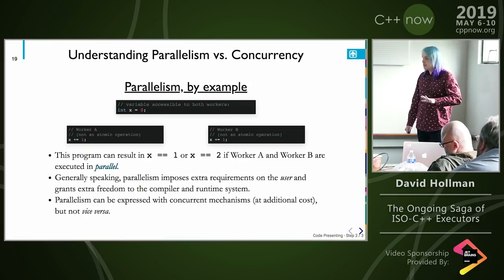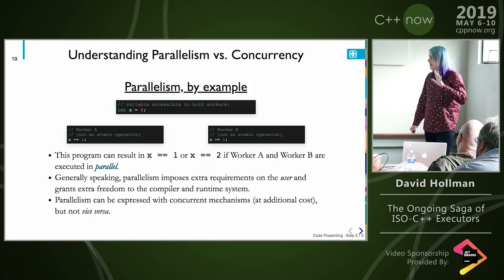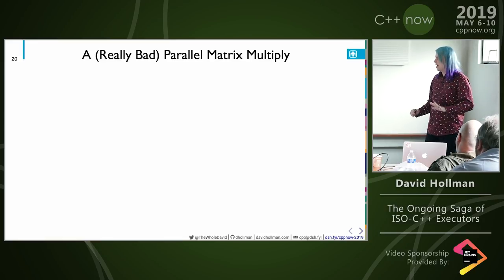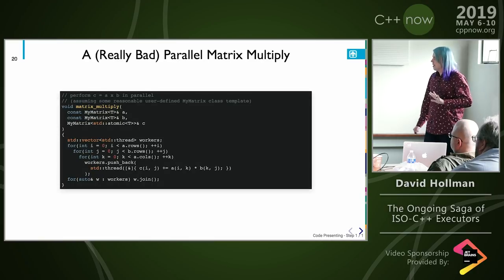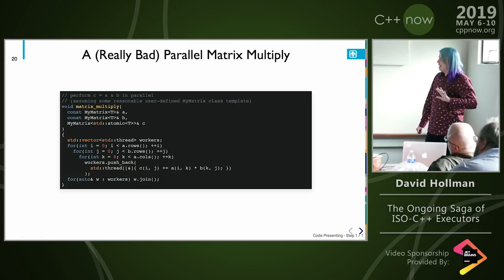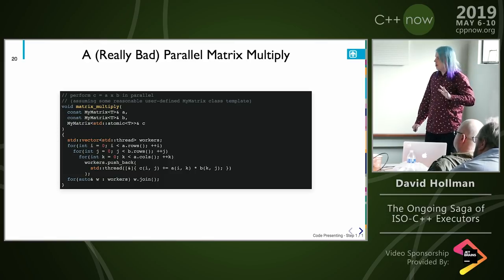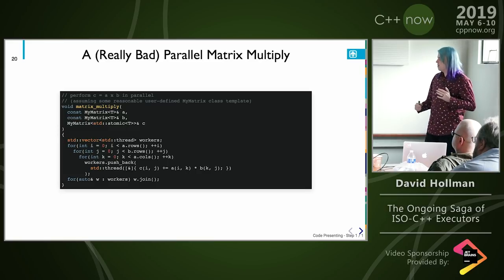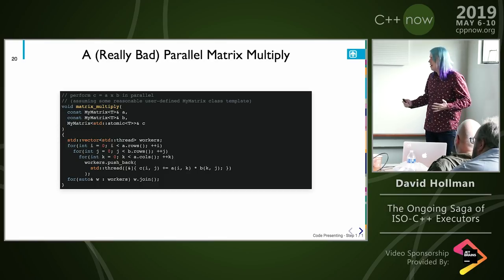This is a very important point: parallelism can be expressed with concurrent mechanisms at an additional cost, but not vice versa. Here's a really bad matrix multiply — I'm going to take my matrices, loop over rows, loop over columns, and create a thread for each operation that is parallel, because you can express parallelism with a concurrent mechanism. Is there anyone who thinks this will be fast? No.